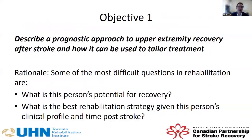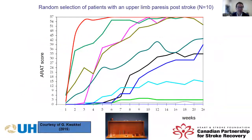My first objective was to describe a prognostic model that would help you understand how you might tailor treatment. The rationale is that some of the most difficult questions in rehabilitation are: what is this person's potential for recovery, and what is the best rehabilitation strategy given this person's clinical profile and time post-stroke? To illustrate this point, I will tell you about a random selection of different people following a stroke and the different patterns of recovery they can follow.